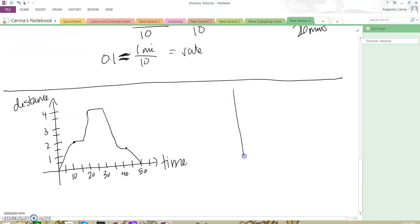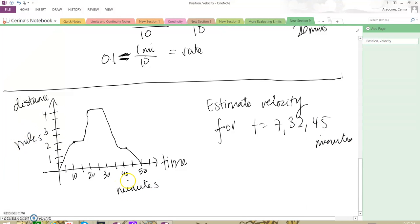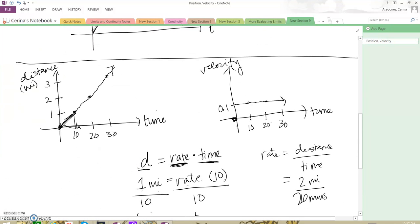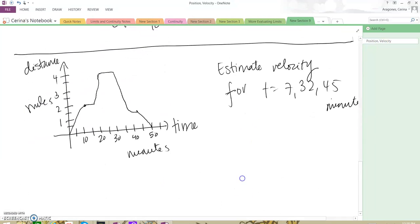This is what Ellen's travels look like. We want to know what our velocity graph would look like. We wanted to estimate what her velocity would be, estimate velocity for the times 7, 32, and 45 minutes. So this is in miles and this is minutes. Just like here with our simpler linear equation, we could estimate the velocity using this slope, this rate of change. So we can do a similar thing with Ellen's distance-time graph.